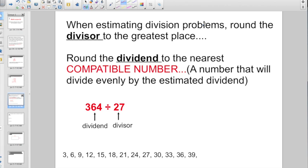Check out this guy. When estimating division problems, round the divisor to the greatest place. But then we want to round the dividend to the nearest compatible number. And what we mean by a compatible number is a number that will divide evenly by the estimated divisor. So here I have 364 divided by 27. But we want to estimate it using compatible numbers. So we're always going to round the divisor to the greatest place. 27 would round up to 30. But if I rounded 364 to the greatest place, it would just be 400. And 400 divided by 30 is not going to divide evenly without a remainder. So I have to do something here.